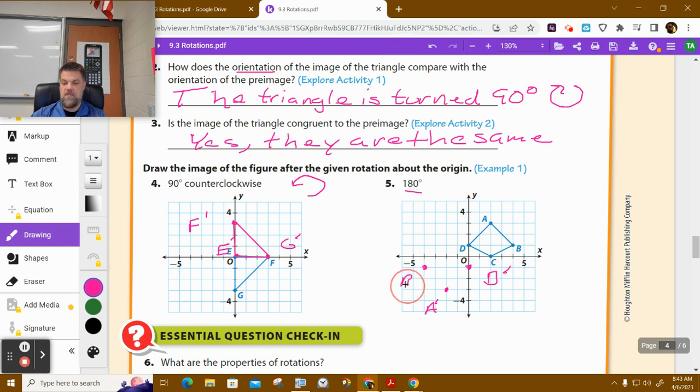B prime would be negative 4, negative 1. That's B prime. And then C prime is right on the x-axis here at negative 2. So that's C prime.